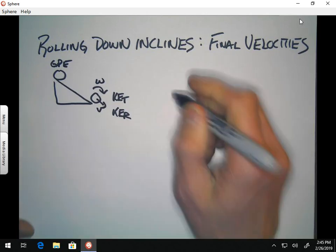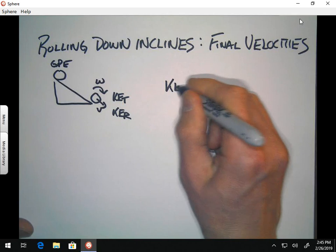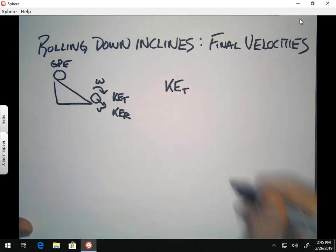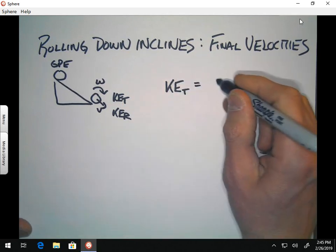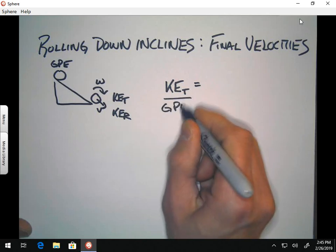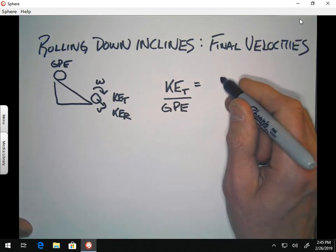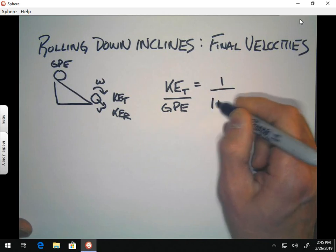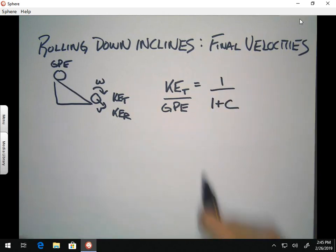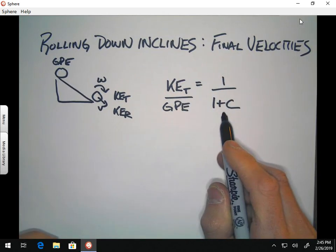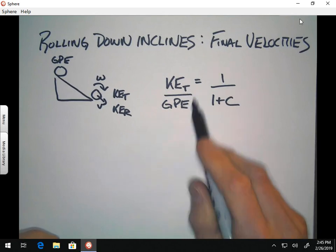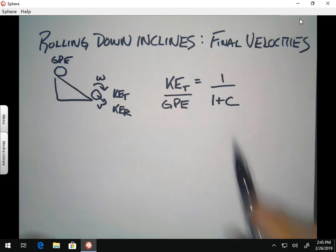So, we showed in the previous lesson that the translational kinetic energy can be known, and we showed that this ratio works. So, translation to GPE is equal to 1 over 1 plus C.